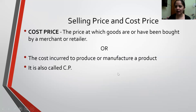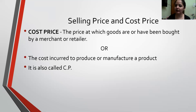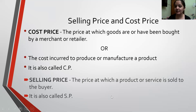A quick recap of all the terms we have learned. Cost Price is the price at which goods have been bought by a merchant or retailer, or the cost incurred to produce or manufacture a product. In short, it is called CP. Selling Price is the price at which the product is sold to the buyer or customer. It is also called SP.